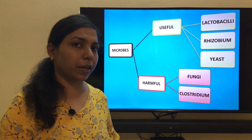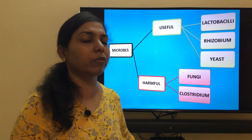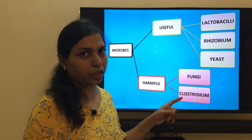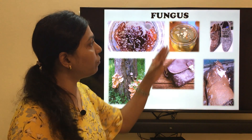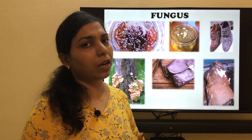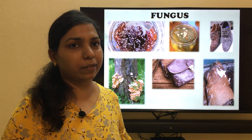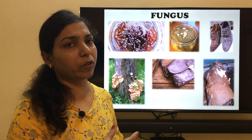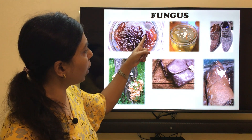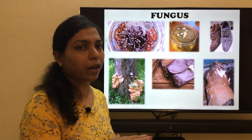Now we move on to harmful microorganisms. We will be learning about two types: fungi and clostridium. Fungi are something we have seen in our daily lives. If jams or pickles are kept for a very long time without opening, when you open them after many days you might find a whitish precipitate or whitish dots floating on the top layer of the jam or pickle.